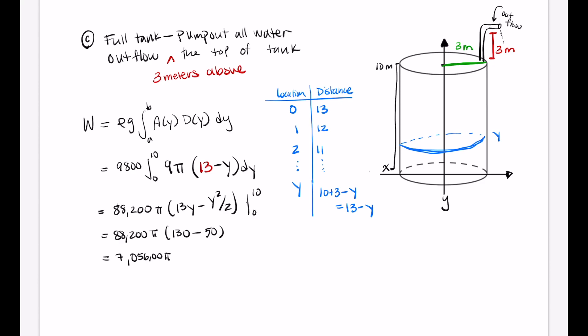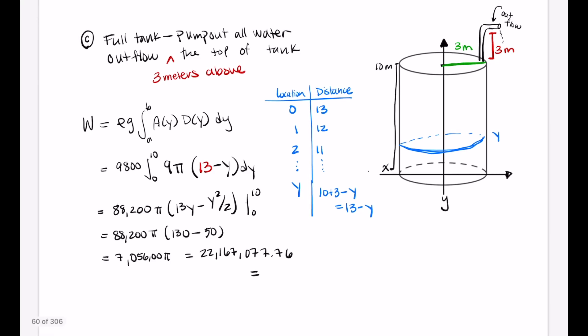Multiplying 7,056,000 by pi gives approximately 22,167,077.76 joules. In scientific notation, that is 2.2 times 10 to the 7th joules.